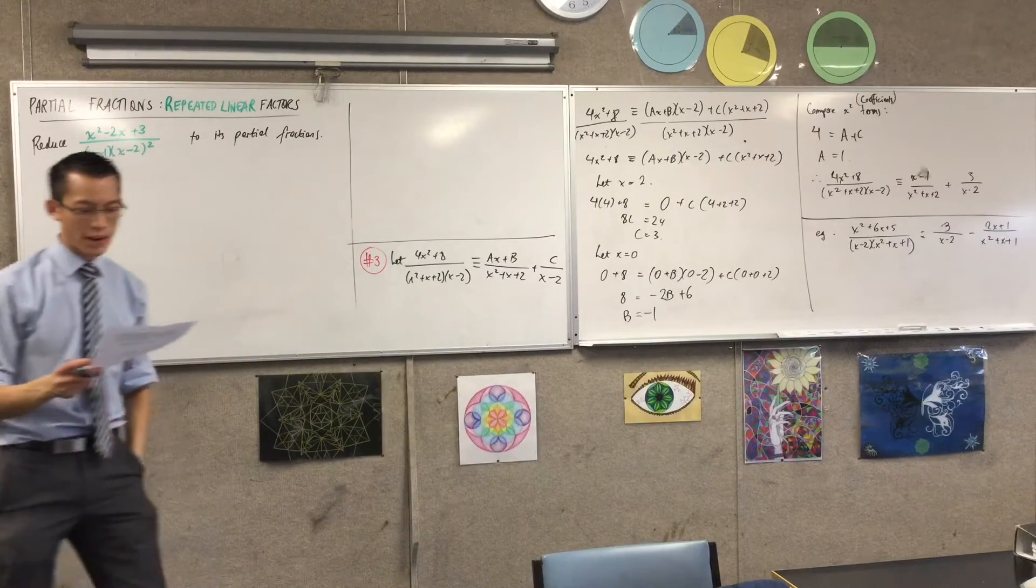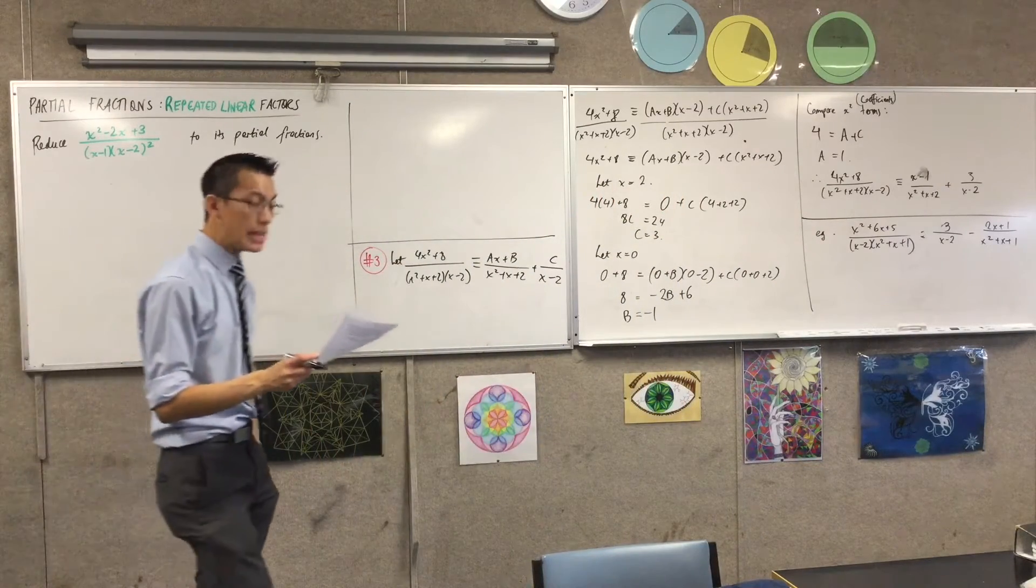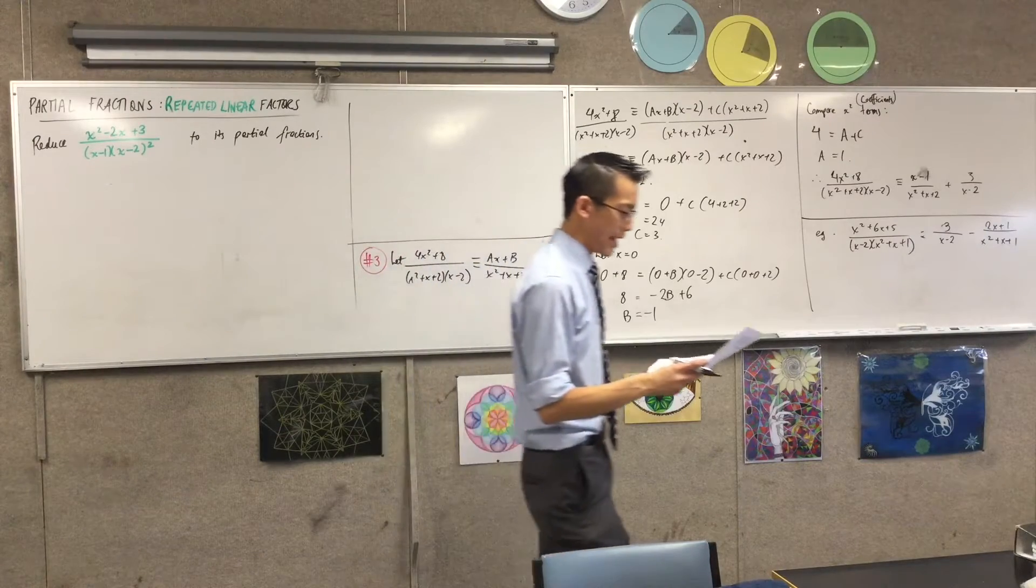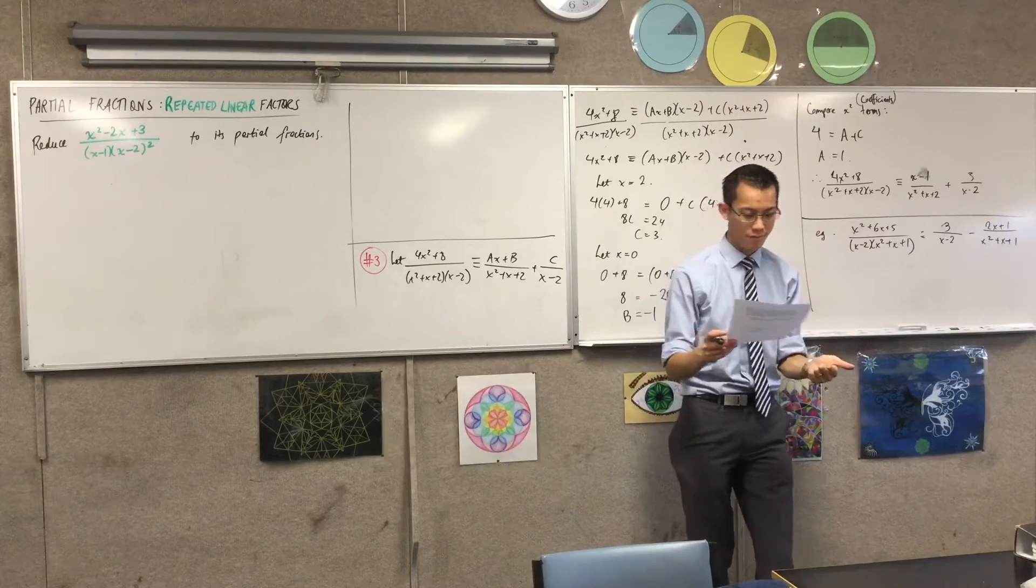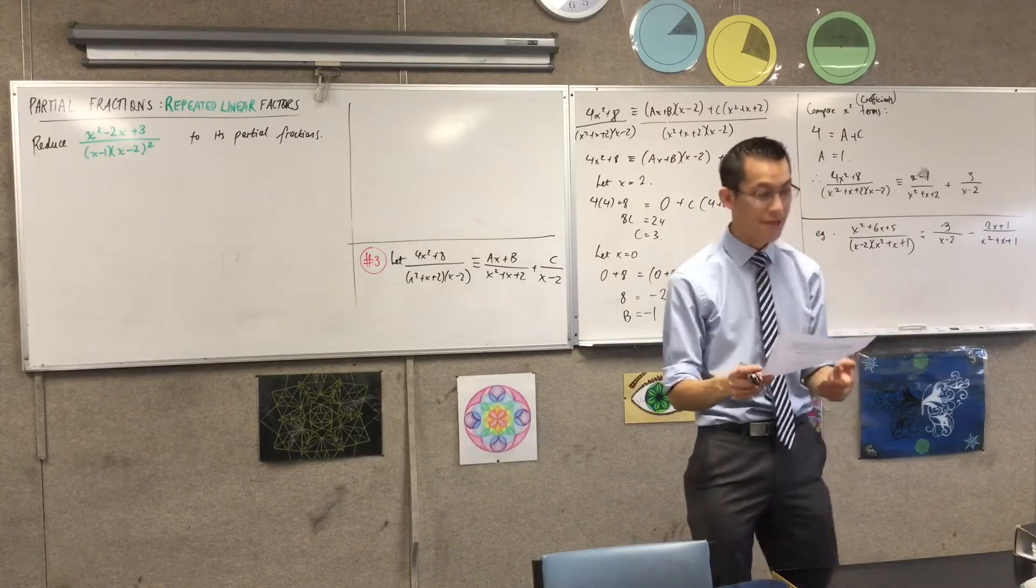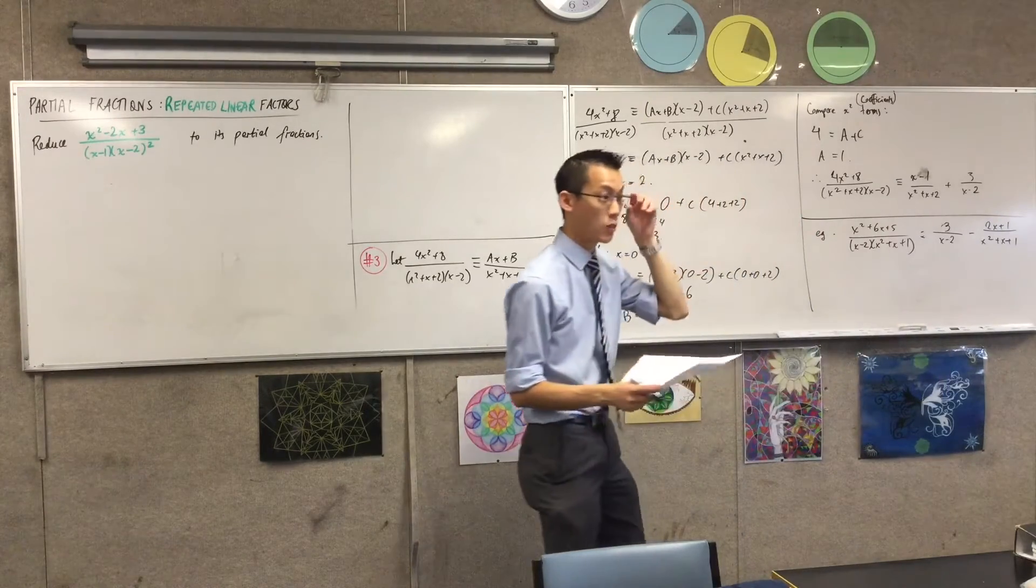The way I went through was after I got my equal numerators, I let x equal 2, that got rid of some terms for me. I let x equal 0, that solved c, then b, and then I actually did exactly the same - I compared the x squared terms.